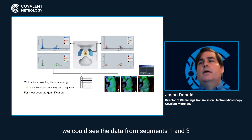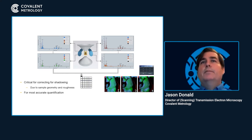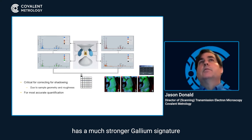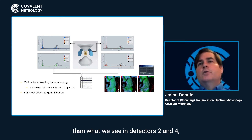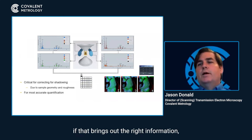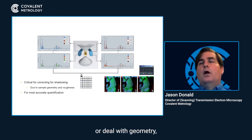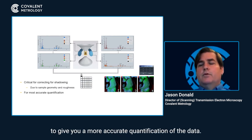we can see the data from segments one and three has a much stronger gallium signature than what we see in detectors two and four. And we can use that to shade the image if that brings out the right information, or deal with geometry that may be from the structure to give you a more accurate quantification of the data.